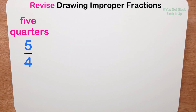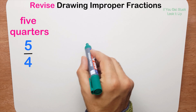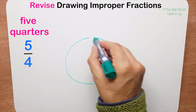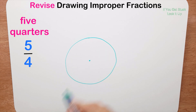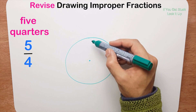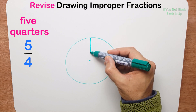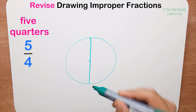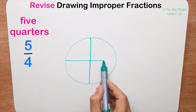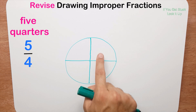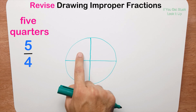The next fraction is five quarters, or five fourths as some people say. I draw my pizza, mark the centre, and cut it into four equal pieces because the denominator is four. I halve it, then halve it again. Now I have one, two, three, four pieces.